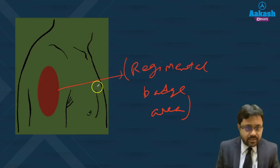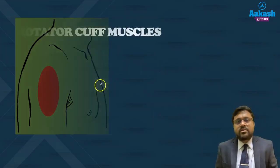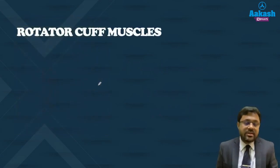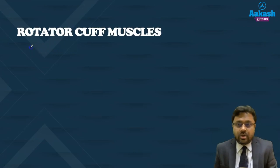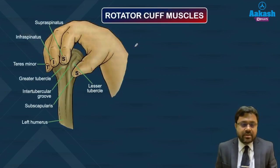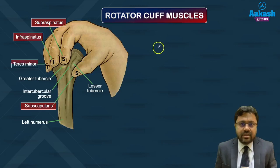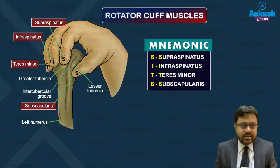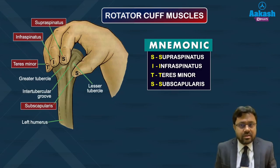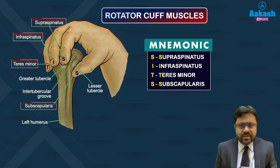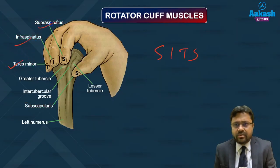Next, the intrinsic shoulder muscles after deltoid are the rotator cuff muscles — four muscles. Use the mnemonic SITS: S for subscapularis, I for infraspinatus, T for teres minor (not major), and S for supraspinatus. So the four rotator cuff muscles are supraspinatus, infraspinatus, teres minor, and subscapularis.